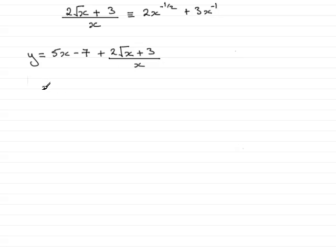So what I'm going to do is copy that back in, so we have 5x minus 7, and instead of this, I'm going to write those two terms. So that's plus 2x to the minus 1 half plus 3x to the minus 1.